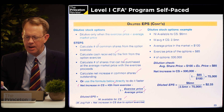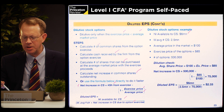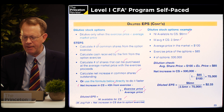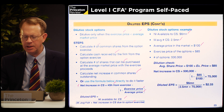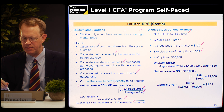In our example, net income available to common shareholders is $6 million, the weighted average common shares outstanding is 2.5 million, the average price of the company's stock for the period is $100, and the exercise price of the outstanding options is $85. On average, the options are in the money, and the number of options is 500,000.